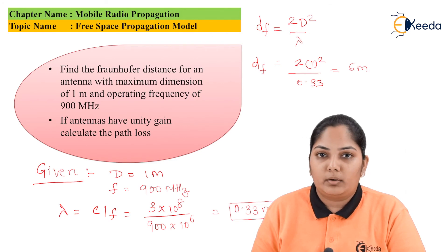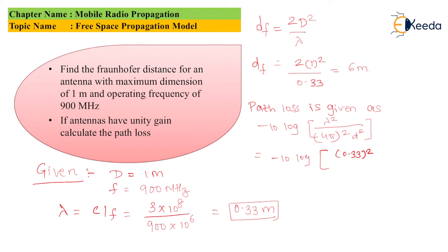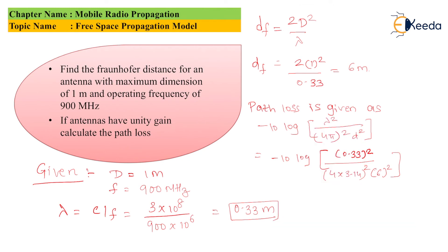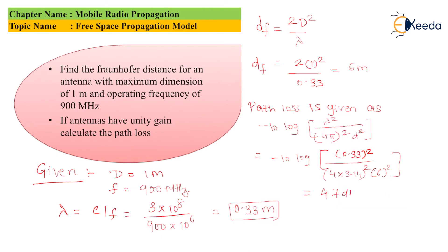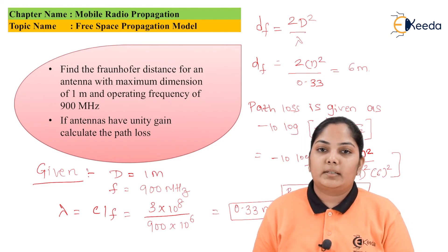Finally, we calculate the path loss using the path loss equation with all the values substituted in. The final answer for path loss comes out to 47 dB.